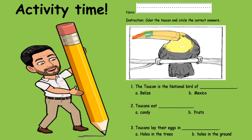So now let's go to the questions below, or the phrases. And you are to fill in the blanks. Number one: The toucan is the national bird of A. Belize or B. Mexico. Let us circle our answer.